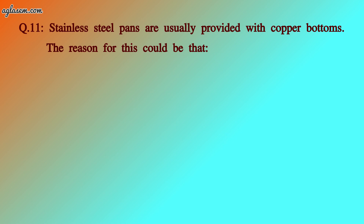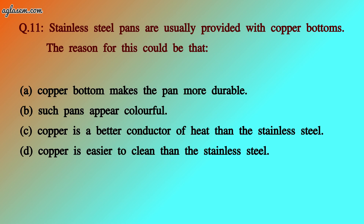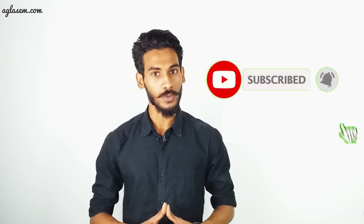Question number 11: stainless steel pans are usually provided with copper bottoms. The reason could be: a) copper bottoms make the pan more durable, b) such pans appear colorful, c) copper is a better conductor of heat than stainless steel, or d) copper is easier to clean than stainless steel. The answer is: copper is a better conductor of heat than stainless steel. This is all for this chapter — hope you liked the video. Please like, share, subscribe, and write any doubts in the comment section below. See you soon, bye bye!